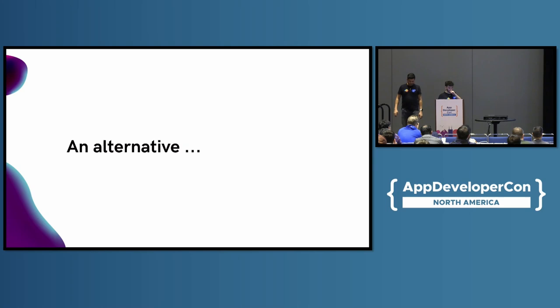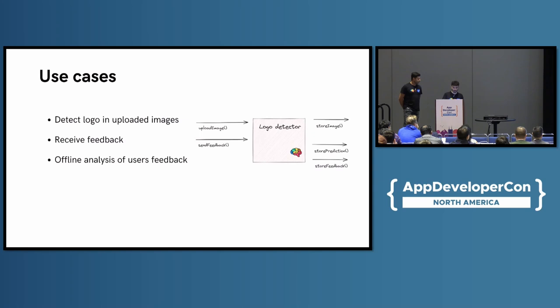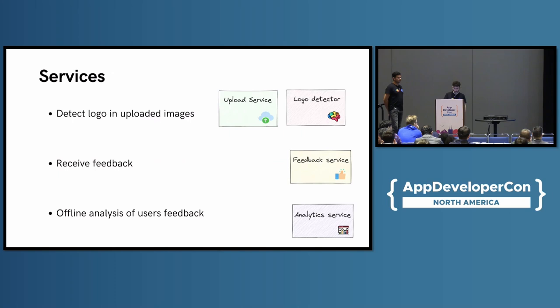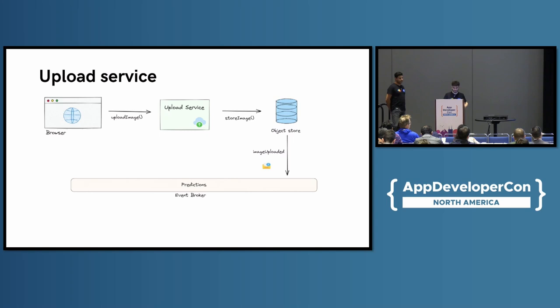Let's recap what the main use cases are in the system. We need to detect logos in images that the user provides, receive feedback from the user, and eventually do offline analysis to correlate the predictions to the model version as well as user feedback. To do that, we split each use case into different services, which helps us add more functionality without changing the existing services. For the first use case — detecting logos in uploaded images — we have an upload service, which just receives the image and stores it in the object store. The object store is wired to an event broker, which is our mechanism for communicating with other services.